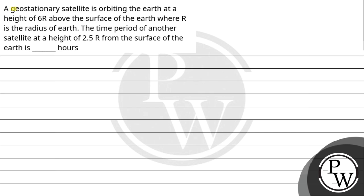Hello, let's read the question. A geostationary satellite is orbiting the earth at a height of 6R above the surface of the earth, where R is the radius of the earth. The time period of another satellite at a height of 2.5R from the surface of the earth is dash hours.